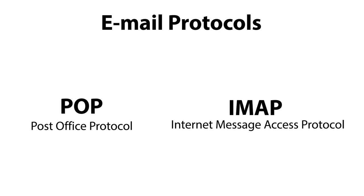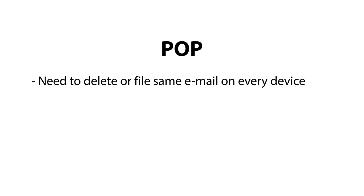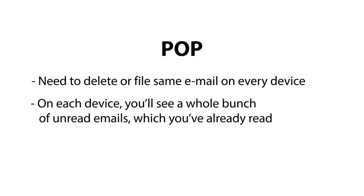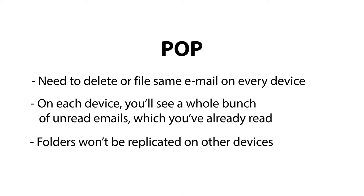There is one big difference between the two, and it all has to do with how your emails are stored on your devices. POP simply downloads your emails onto the computer you're currently using. So if you're using a computer and you delete an email, that email will still be visible on your iPhone when you access the email on it. That will also mean that if you've already read an email on one device, it will still show up as unread on another device. On top of all that, if you've created email folders, they'll only show up on the device on which you created the folder.